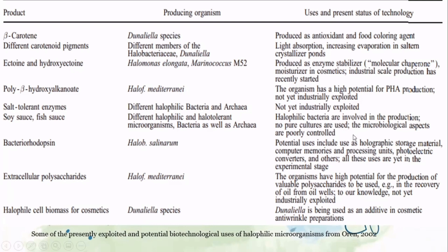Halobacterium salinarum produces bacteriorhodopsin, with potential uses including holographic storage material, computer memories and processing units, and photoelectric converters, though all these uses are still in the experimental stage. Extracellular polysaccharides produced by halophiles show high potential for use in oil recovery from oil wells, but are not yet industrially exploited. Halophile cell biomass for cosmetics is produced by Dunaliella species, which is used as an additive in anti-wrinkle cosmetic preparations.